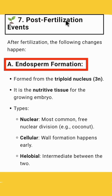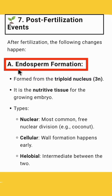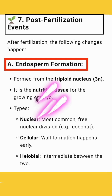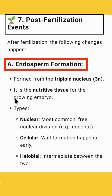Topic is post-fertilization events. After fertilization, the following changes happen. First is endosperm formation. Endosperm is formed from the triploid nucleus. Endosperm is the nutritive tissue that gives nutrition for the growing embryo.